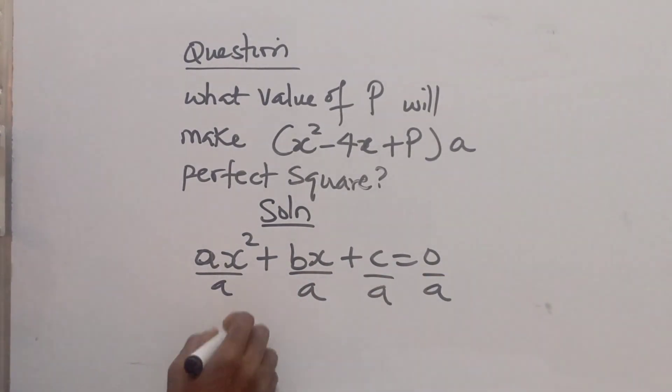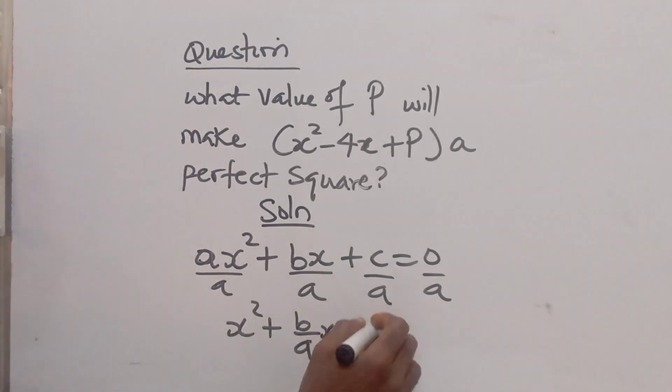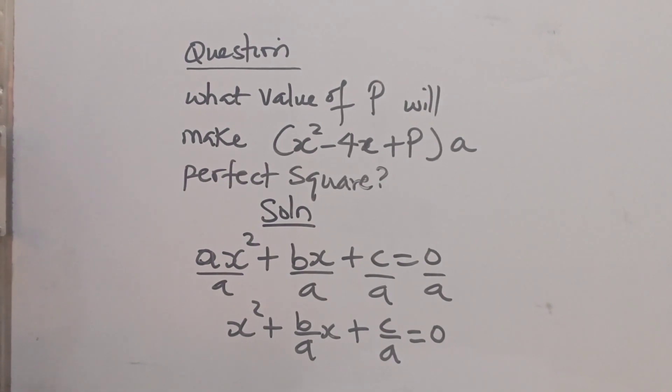So which gives us x squared plus b over a times x plus c over a is equal to 0. Now at this point what do you do? You see that most times this is the general form of the quadratic equation. We divide it by a so we have this.